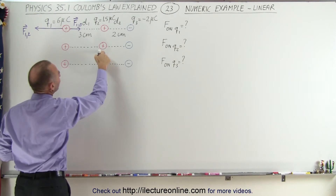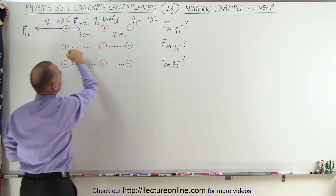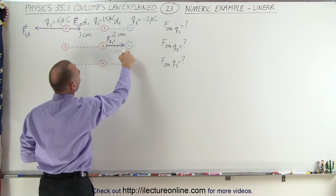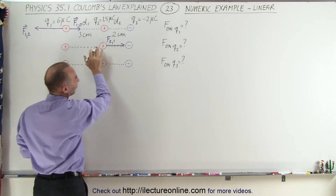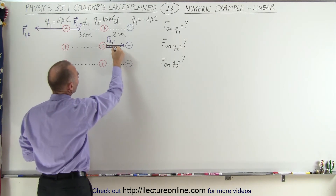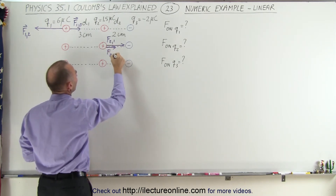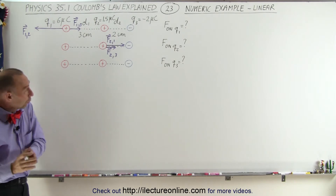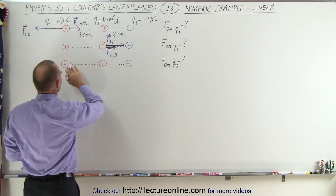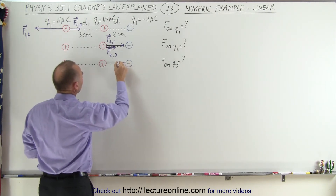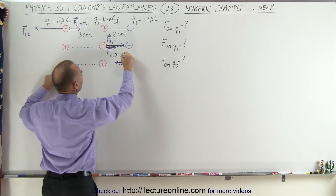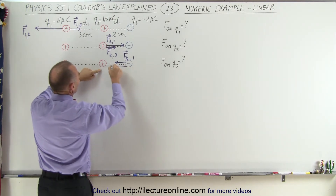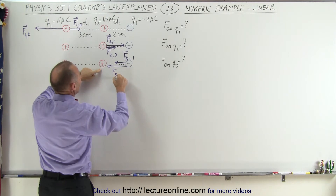Over here on Q2, this will feel a force of repulsion due to the presence of Q1, so this will be the force between 2 and 1. And here we feel a force of attraction because of the presence of Q3, so this will be the force between 2 and 3. Draw little arrows on them because these are vectors. For the third charge, this charge will feel a force of attraction due to Q1 — a small force because they're far apart — so this will be the force between 3 and 1. And then we have the force of attraction between Q3 and Q2, probably a little bit bigger, the force between 3 and 2.